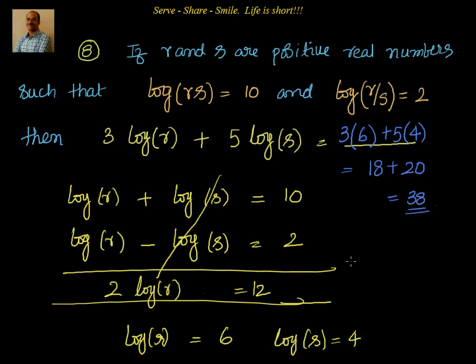So that's one more pretty straightforward question. If r and s are positive real numbers such that log of rs is 10, log of r by s equal to 2, what is the value of 3 log r plus 5 log s? We know log of rs is log of r plus log of s. Similarly, log of r by s is log of r minus log of s. So we convert this into a linear equation in two variables.